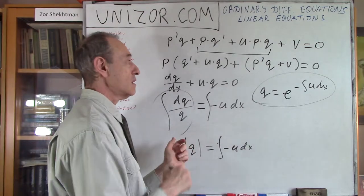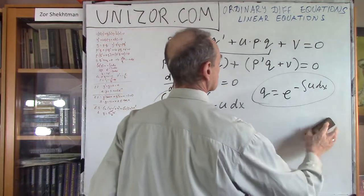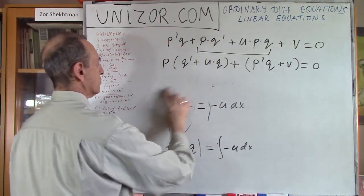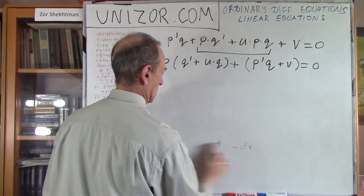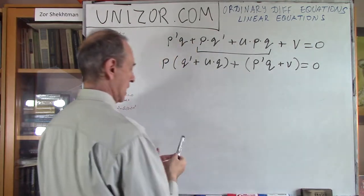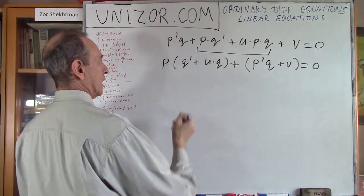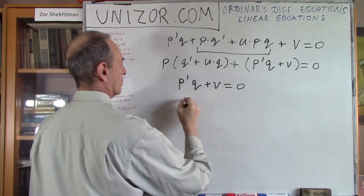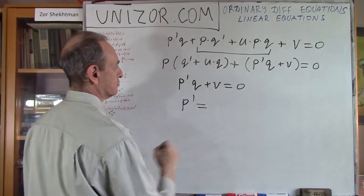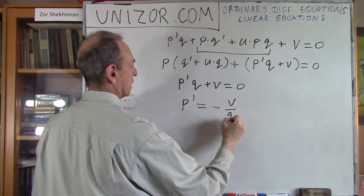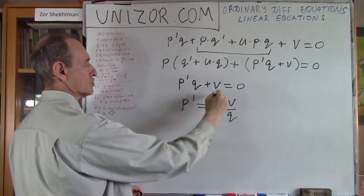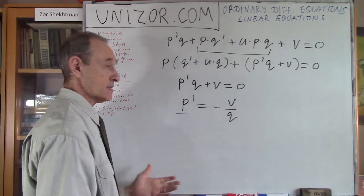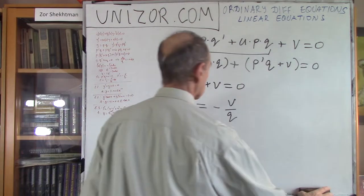Then, how to determine p if q is known? That's even simpler: since q is known and p'q + v = 0, derivative of p equals minus v divided by q. So what I have to do is just integrate these two things and get p. Basically, that's the approach.